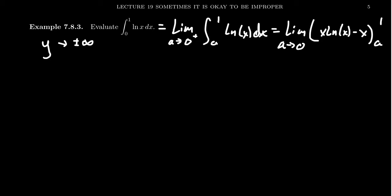Plug in 1. Notice that you're going to get 1 times the natural log of 1. That's a 0, so that's just going to vanish. So, you're going to get a negative 1 right there for the first piece. And then we're going to subtract from that the limit as a approaches 0 from the right. You're going to get a times the natural log of a minus a.